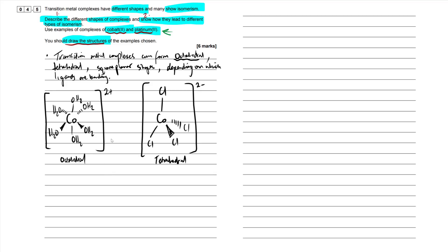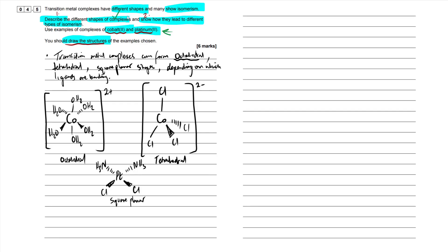The last shape is square planar, and for this I'm using platinum 2+. I'll go with cisplatin — two NH₃ ligands and two Cl ligands. Note that there's no charge on this complex, so we don't need square brackets. If there's no charge, we don't write square brackets. Label it as square planar. That completes our first point — we've described all three shapes and drawn the structures.